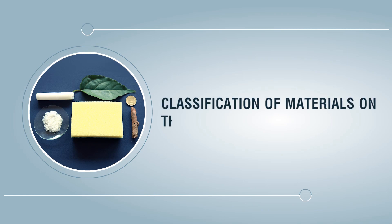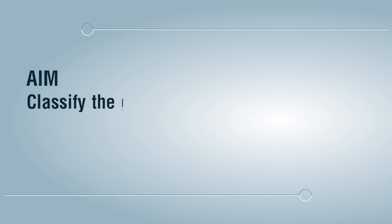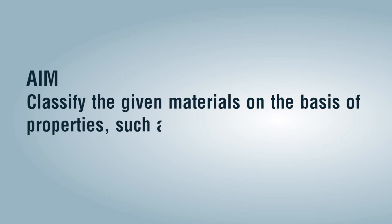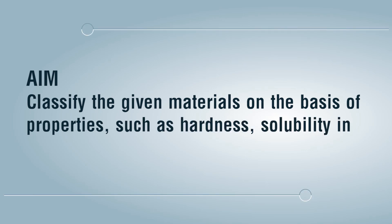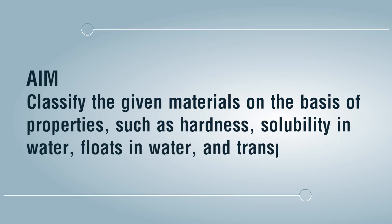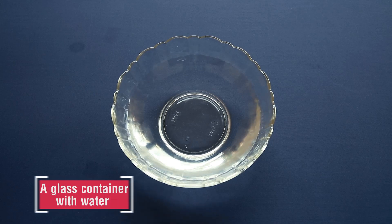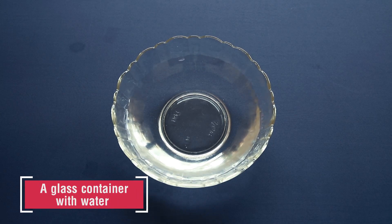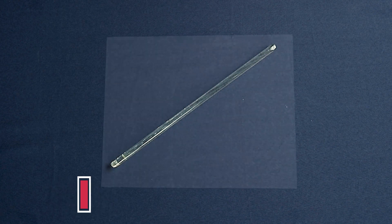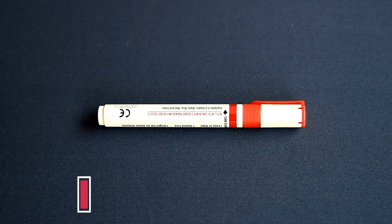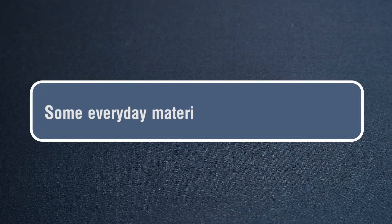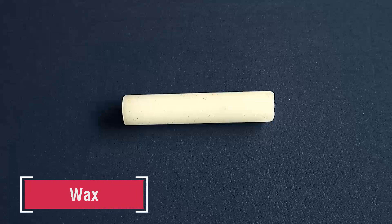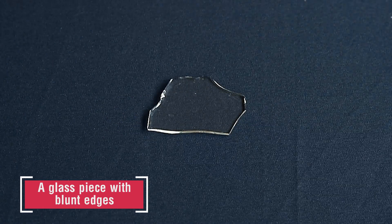Classification of materials on the basis of its properties. Aim: classify the given materials on the basis of properties such as hardness, solubility in water, floats in water, and transparency. Materials required: glass containers with water, glass rod, a sheet of white paper, a marker, and some everyday materials such as wax and a glass piece with blunt edges.